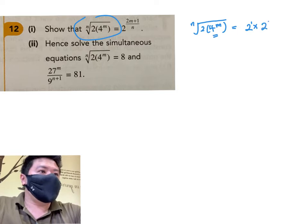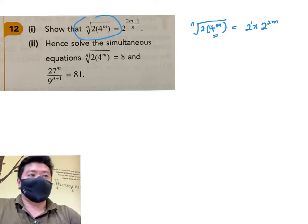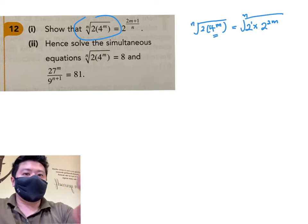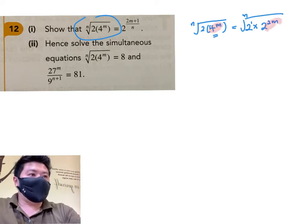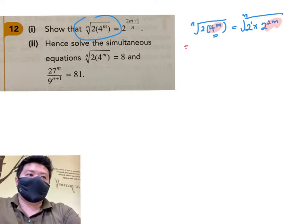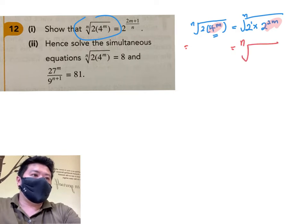4 is the same as 2 power 2, and there's an m. So 4 power m, essentially, I've converted this 4 power m to 2 power 2m. And from here, this is the same n root as 2 power 2m plus 1.